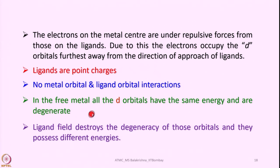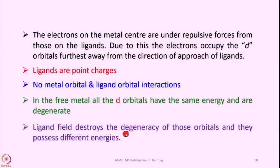In the free metal, all d orbitals have the same energy and are degenerate. If you take a metal atom and atomize it into a gaseous metal ion, all d orbitals are degenerate. Once they enter into the ligand field, the ligand field destroys the degeneracy of those orbitals and they possess different energies depending upon the type of ligand field in the vicinity of the metal center.